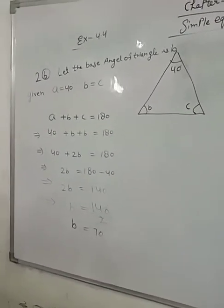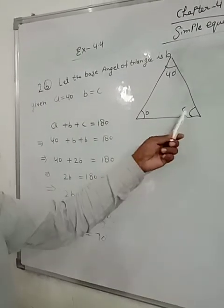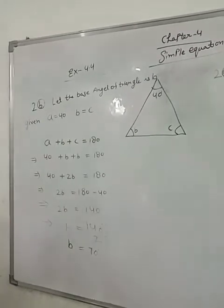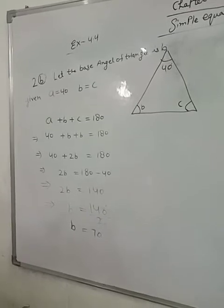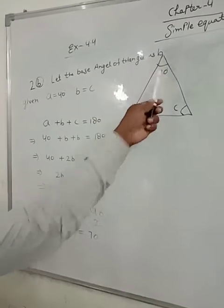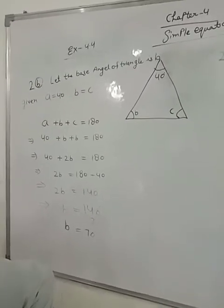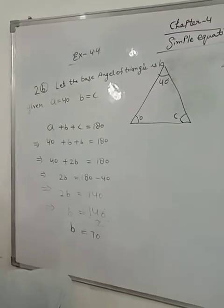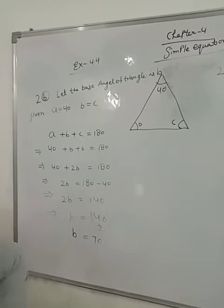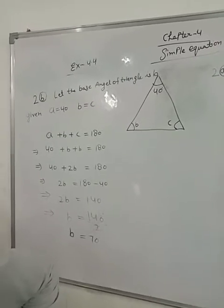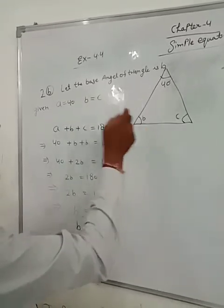In an isosceles triangle, the base angles are equal. B and C are equal. The vertex angle A is 40 degrees. What are the base angles of the triangle? Remember the sum of three angles of a triangle is 180 degrees.